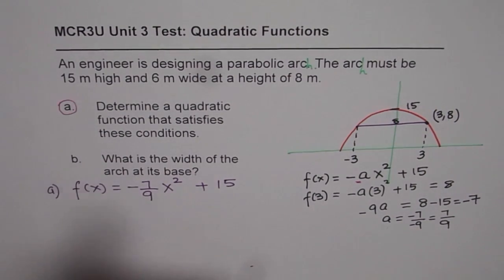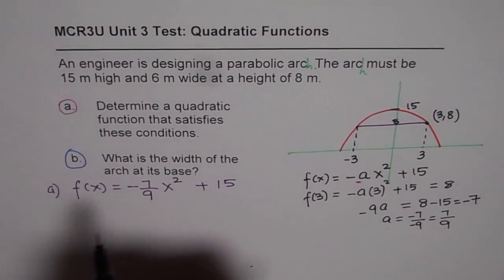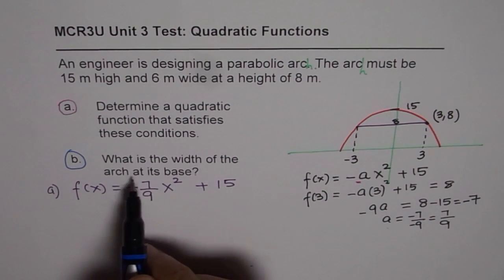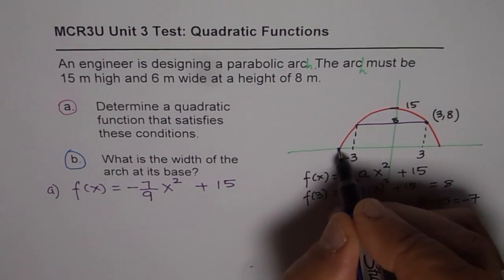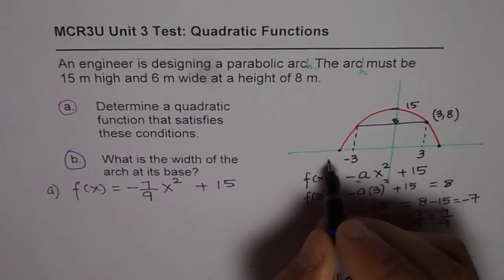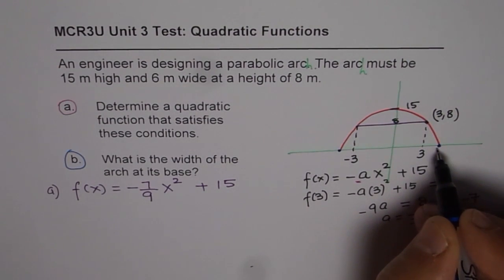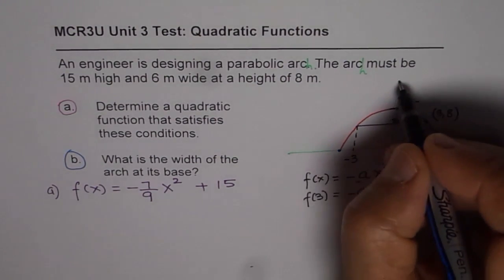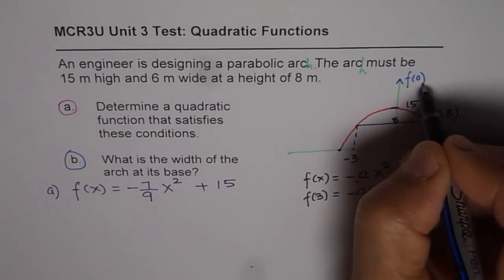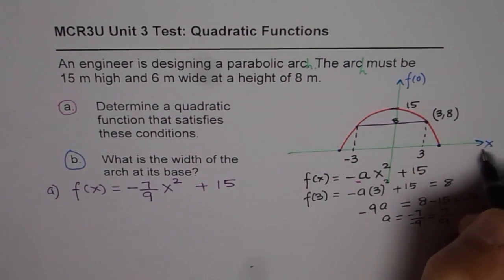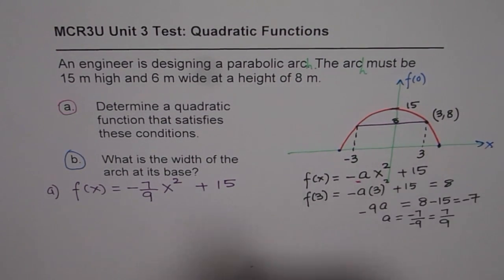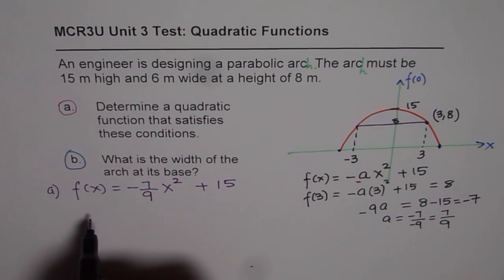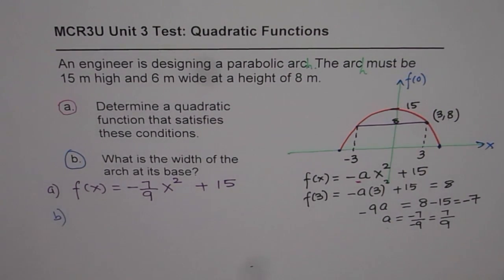Now let's look into part b. Part b is what is the width of the arc at its base. So we need to find these two points. The difference between these two points will give us the width. Now at these two points, the y value is 0. So we will substitute 0 and figure out what this point should be. So we are basically finding the x-intercepts. Now let us do part b and find the x-intercepts.